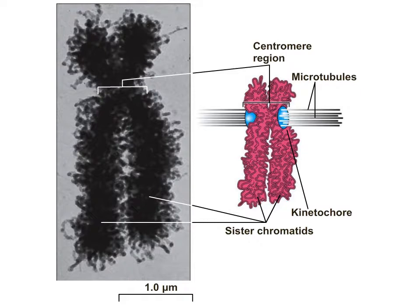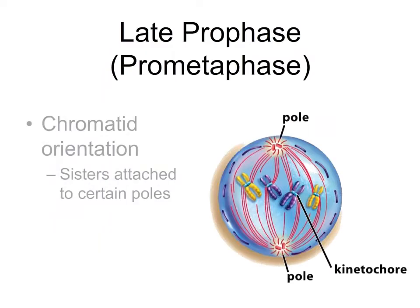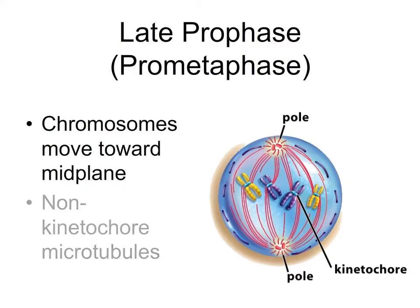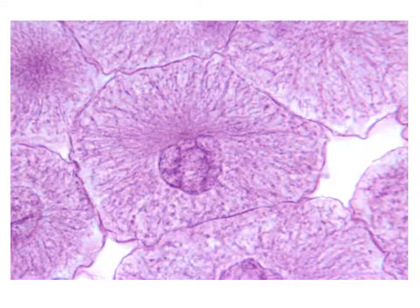Kinetochores and microtubules are not visible in the TEM of the metaphase chromosome. Chromatid orientation is very important, as the microtubules will attach to the sister chromatid facing the pole they originate from. As the spindle nears completion, the microtubules push the sister chromatids to the midplane of the cell. A portion of the spindle microtubules will not attach to the kinetochores but will later help the cell to elongate. Here's a micrograph of a cell in prophase — the duplicated chromosomes are faintly visible, the spindle apparatus is forming, but the nuclear envelope has not disintegrated completely.